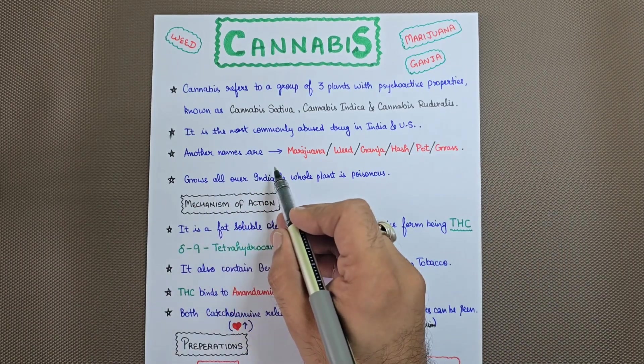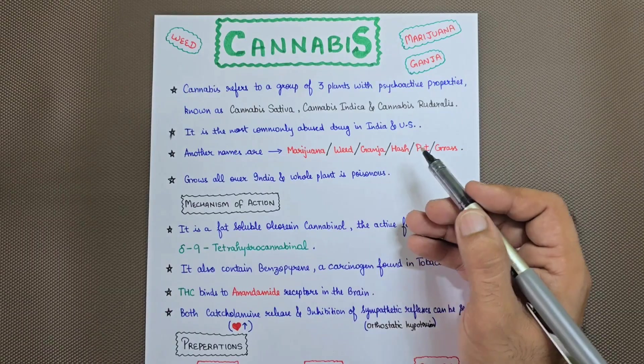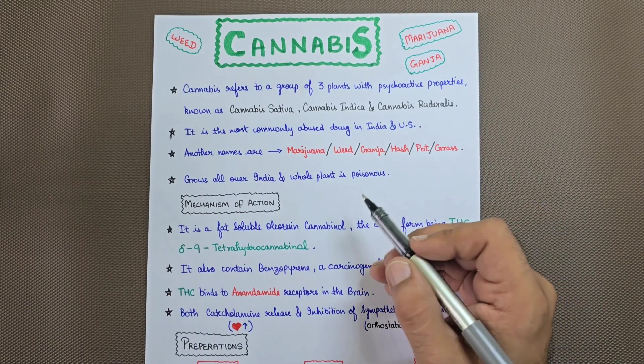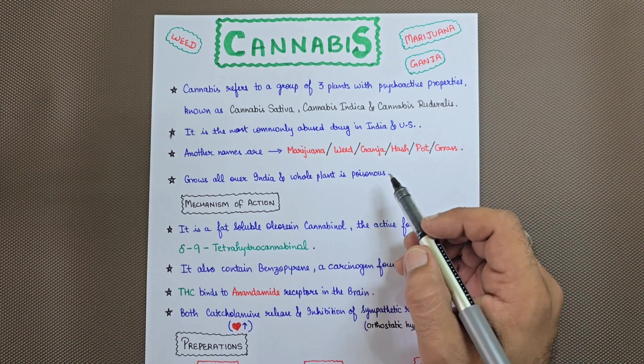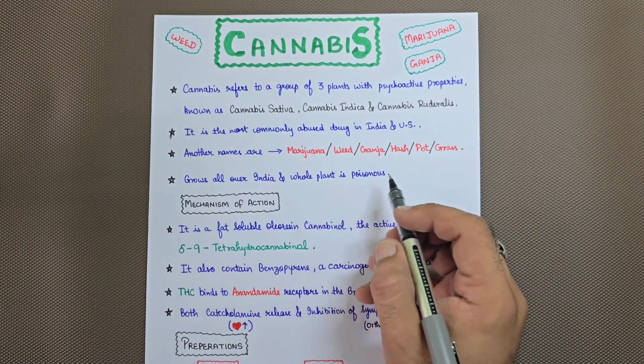The other names for cannabis are marijuana, ganja, weed, or sometimes hash, pot, or grass, based on the particular region in which they are being consumed. It grows all over India and the whole plant is poisonous.